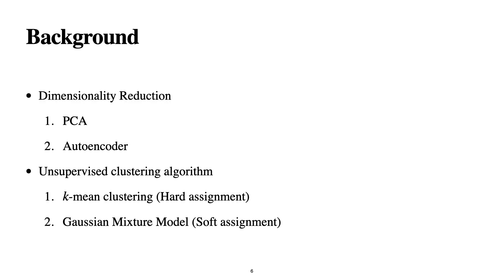Now the background of this paper has two main topics: dimensionality reduction and unsupervised clustering algorithms. For dimensionality reduction I will explain PCA and autoencoder, including different kinds of autoencoders. For unsupervised clustering I will cover K-means clustering and Gaussian Mixture Model. K-means clustering is a hard assignment method and Gaussian Mixture Model is a soft assignment method — I will explain the difference between these two in coming slides.